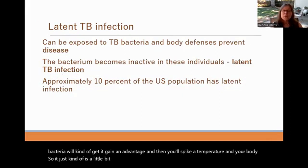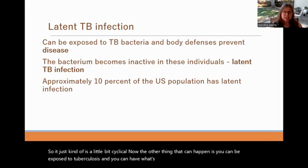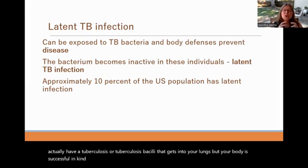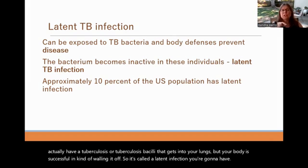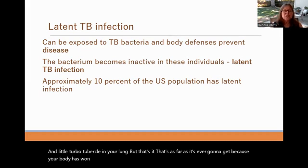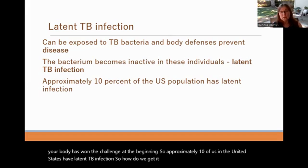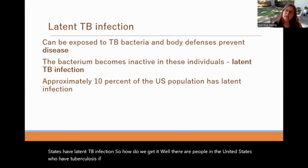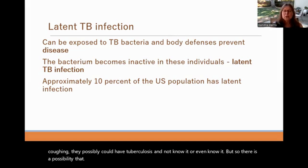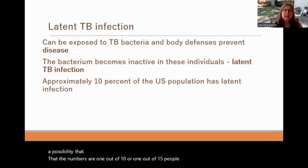Another possibility is a latent infection — where tuberculosis bacilli get into your lungs but your body successfully walls it off. You'd have one small tubercle in your lung, but that's as far as it goes because your body won the initial challenge. Approximately 10% of people in the United States have latent TB infections. There are people in the US who have tuberculosis, and if you've traveled to other countries or sat on an airplane next to someone coughing, they possibly could have had tuberculosis.